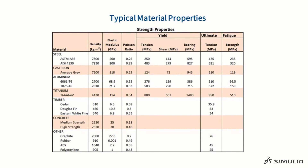In the intro to stress and strain video, we showed you an example of some typical material properties. The stress limits for a material are typically listed under strength properties. In structural design, the three most important strengths to consider are yield strength, ultimate strength, and fatigue strength. First, we will focus on explaining yield and ultimate strength.